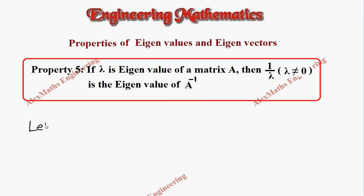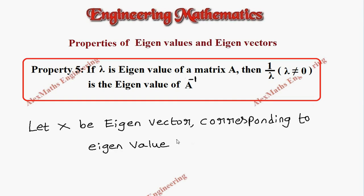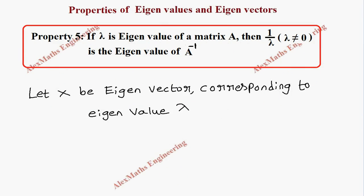Let capital X be eigenvector corresponding to eigenvalue lambda. From this, we have matrix A into X equal to lambda into X.